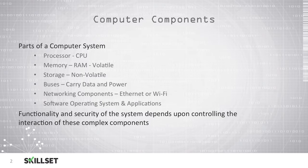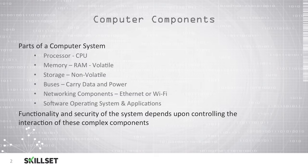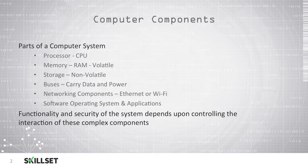Memory, known as RAM or random access memory, is a volatile storage area that is used for temporary storage while using programs and applications. Volatile means that it needs to be powered on in order to retain its memory, so as soon as you turn off the computer you will lose whatever is stored in the memory or RAM.